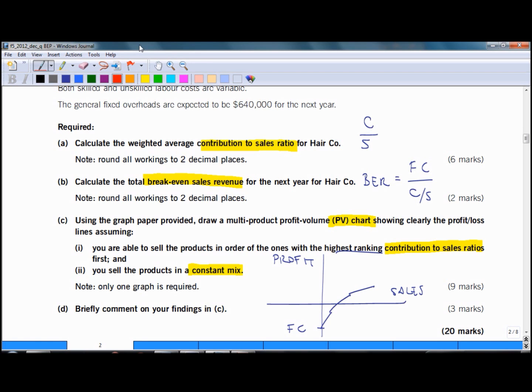In a graph it is represented by a single line in red. Because I don't buy each product separately but every time I go to the shop I buy the constant mix of my yogurts. On a graph you can see two break even points. One is red for the constant mix and one is blue, that's when you can sell the most profitable product first.